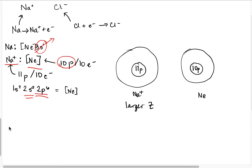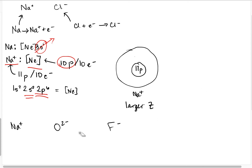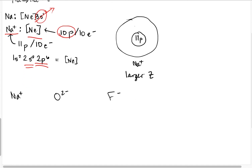We will instead compare sodium ion, oxide ion, and fluoride ion to each other. The reason they're measured differently is that sodium ion, oxide ion, and fluoride ion are all measured when they are in a bond, whereas neon doesn't bond to anybody, so we can't really compare neon's size to these ions since they are in compounds.